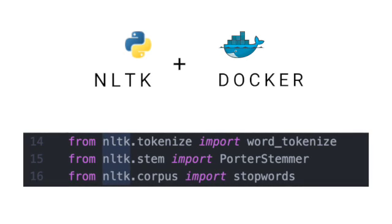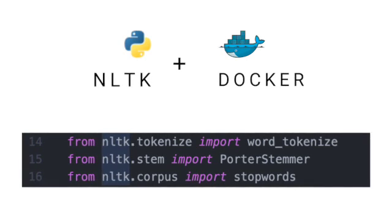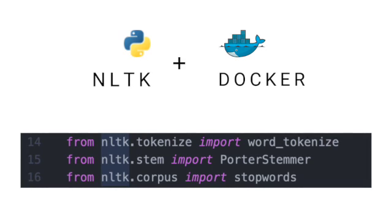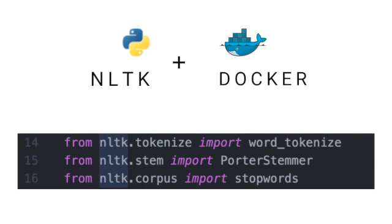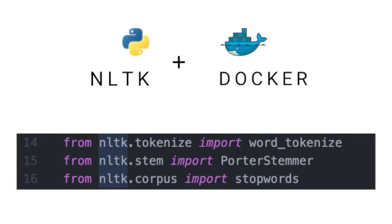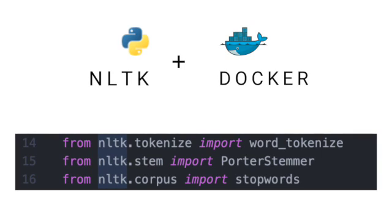NLTK needs to know where to find the necessary data sets. For example, let's say you have to use a StopWords package in your application. There is a need to download the StopWords data set and place it somewhere where NLTK can easily find it. NLTK will usually search for packages in the following places.